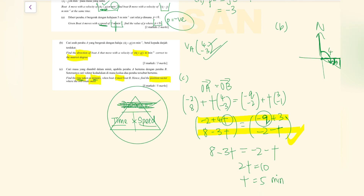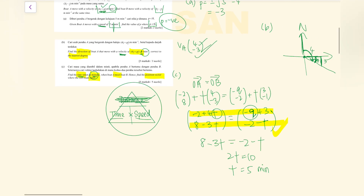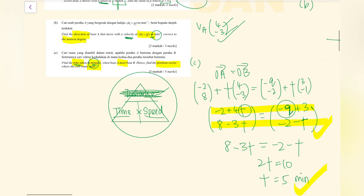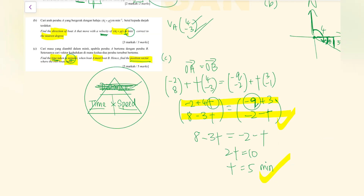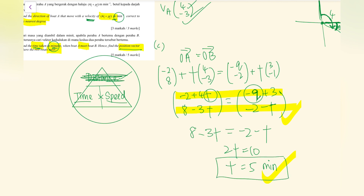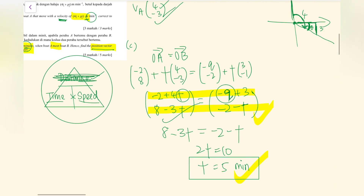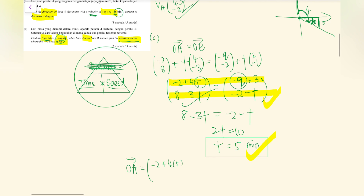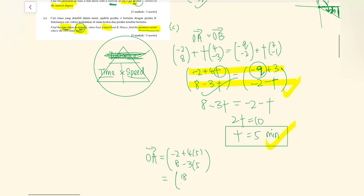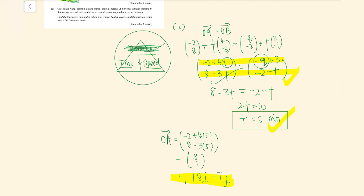So the first answer is t = 5 minutes. Now to find the position vector when they meet, since both boards are at the same place, we substitute t = 5 into the position vector of A: (−2 + 4×5, 8 − 3×5) = (18, −7). So the position vector when they meet is (18, −7).